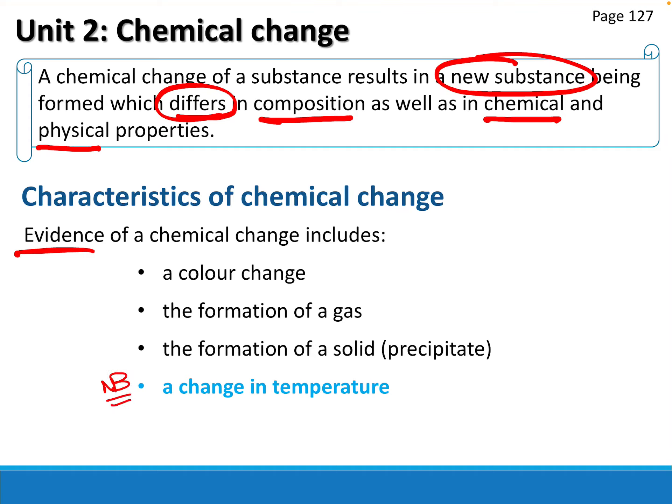There is always a change in temperature during a chemical reaction. This change doesn't have to be an increase - it can be a decrease. It doesn't have to be so big that we can physically feel it, but if we used a thermometer we would see a temperature change, even if it's by one degree. There are also larger energy changes - it takes a lot more energy to bring about a chemical change than a physical change.